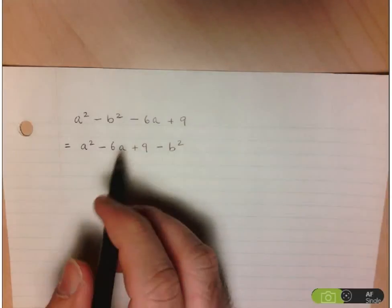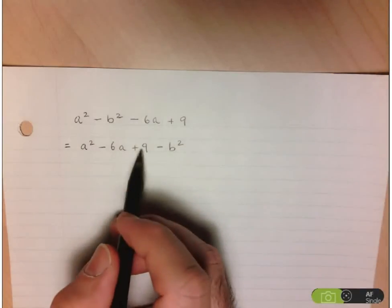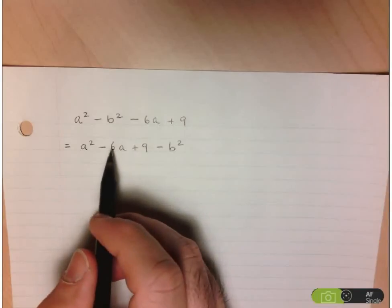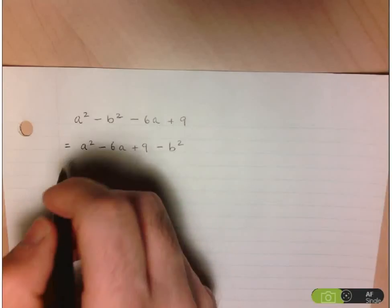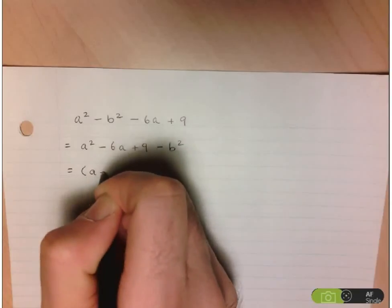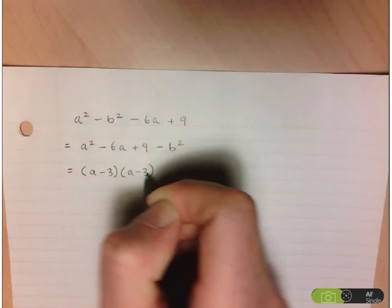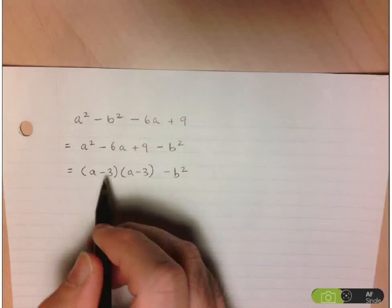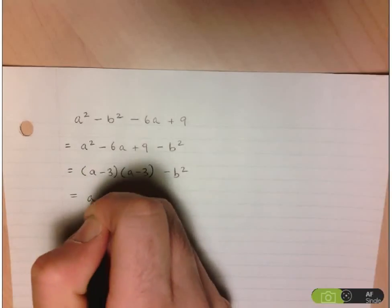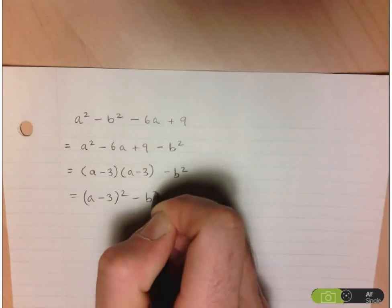Let's see if we can factor this. Are there two numbers that multiply to 9 and add up to negative 6? Well, we've got negative 3 and negative 3. So I can factor this first part as a minus 3 times a minus 3, and then minus b squared. And this is in fact itself a perfect square: a minus 3, all squared, minus b squared.